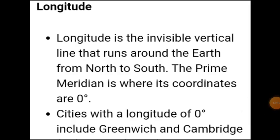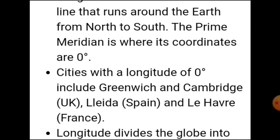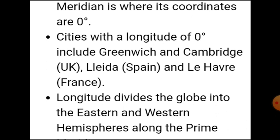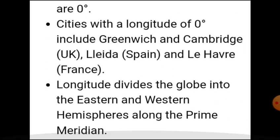Dear students, now let's see about longitude. Longitude refers to invisible vertical lines that run around the earth from north to south. The Prime Meridian is where its coordinate is zero degrees. Longitude divides the globe into the eastern and western hemispheres along with the Prime Meridian.